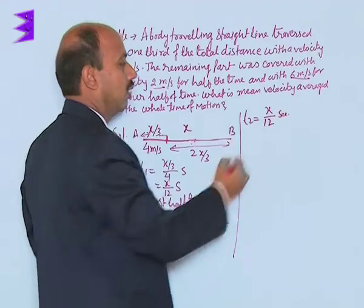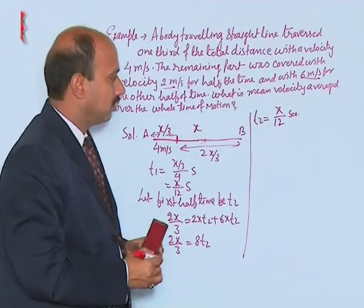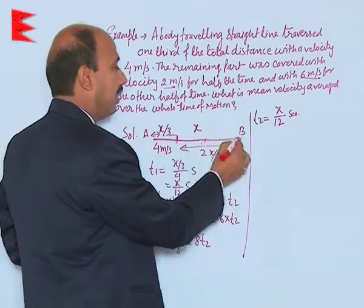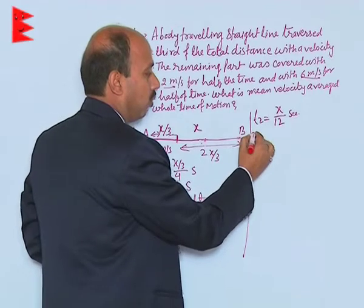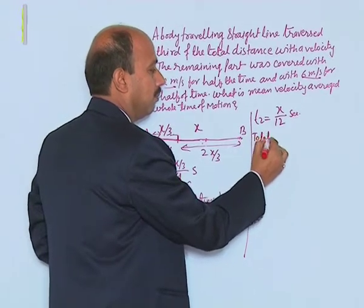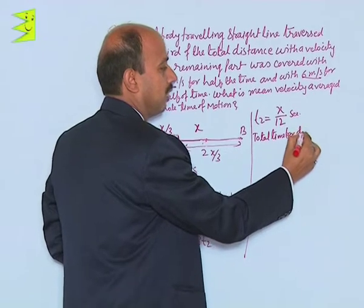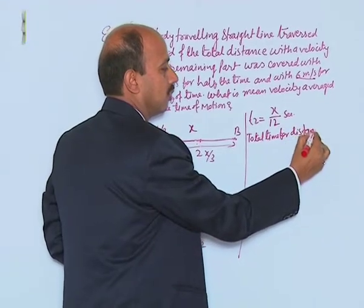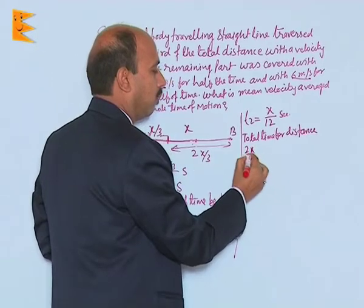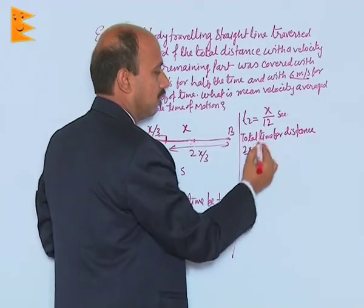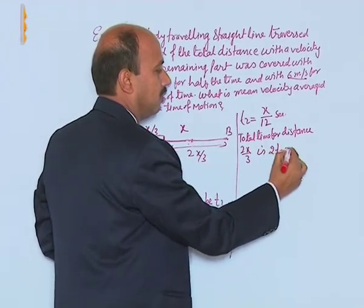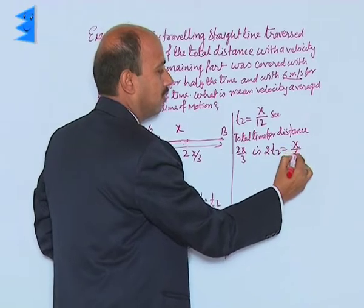x upon 12 seconds. So now the total remaining time, so total time for distance 2x upon 3 is twice of t2, is equal to x by 6 seconds.